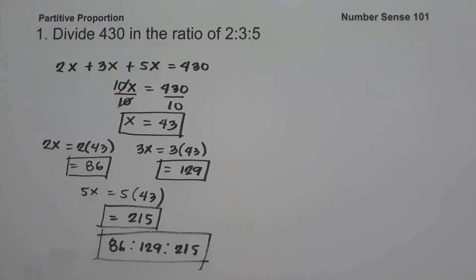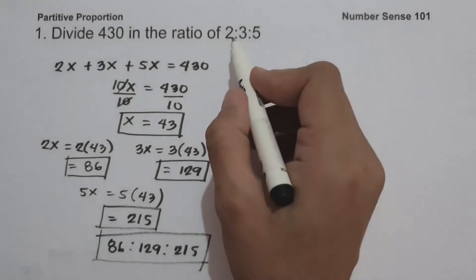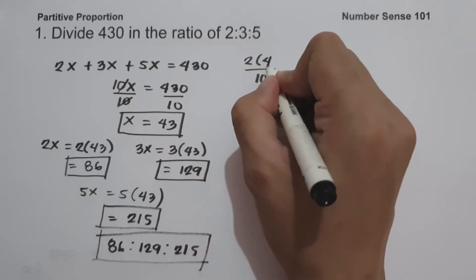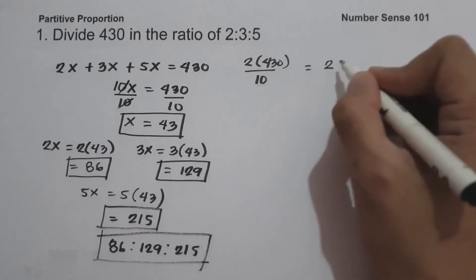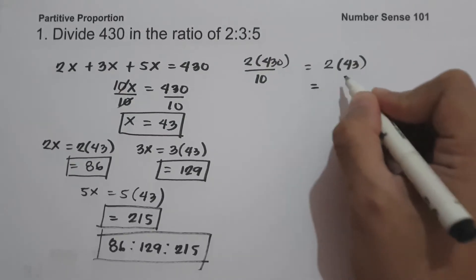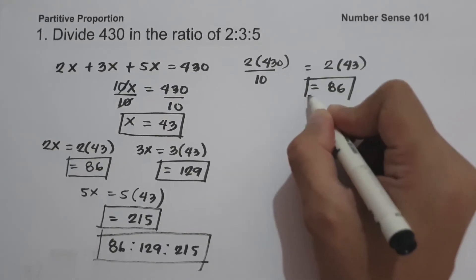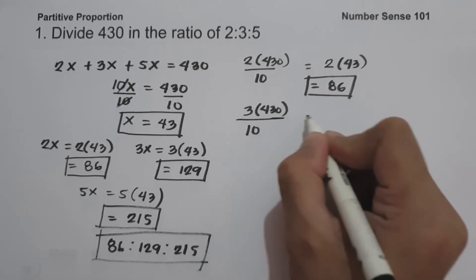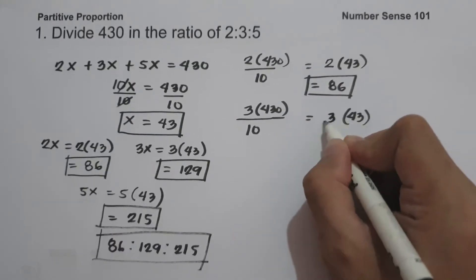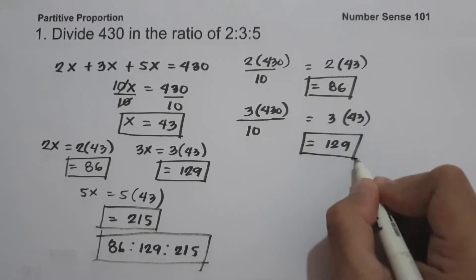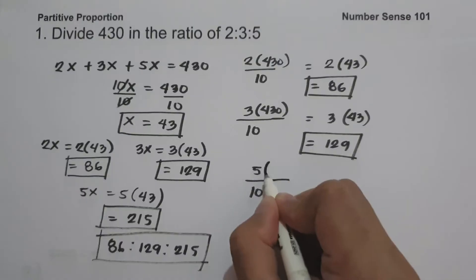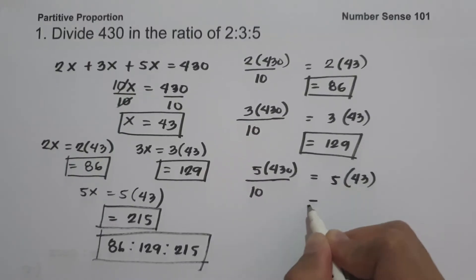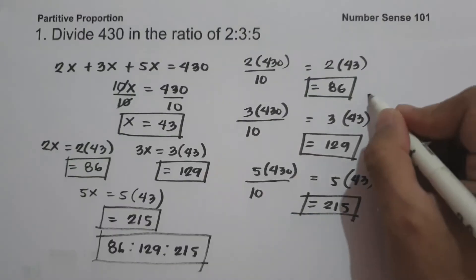The second solution to divide 430: take the sum of the ratio and write it on the denominator, which is 10. Then multiply 2 over 10 by 430 — that is 43 times 2, which is 86. Then 3 over 10 times 430 — that is 43 times 3, which is 129. Then 5 over 10 times 430 — that is 43 times 5, which is 215. As you can see, we come up with the same answer.